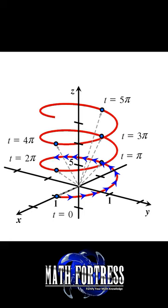We typically draw arrows on the curve to show the direction that the endpoints of the position vectors move along as t increases.